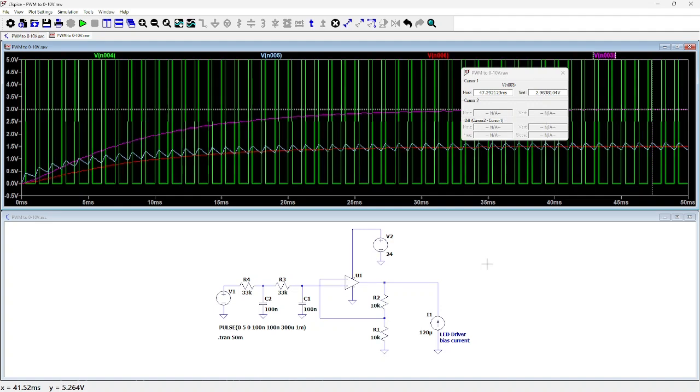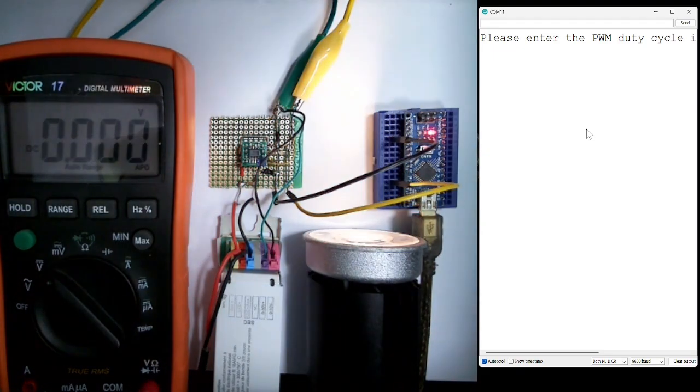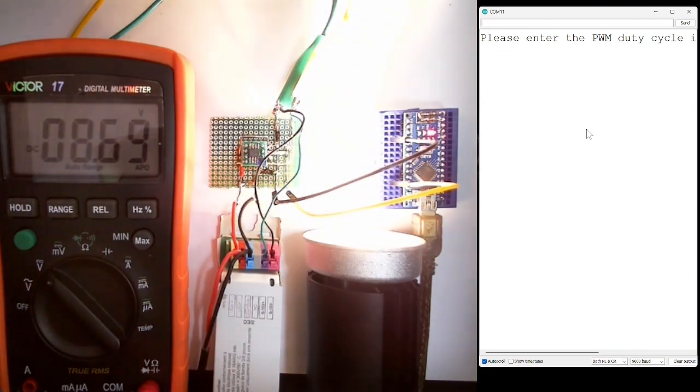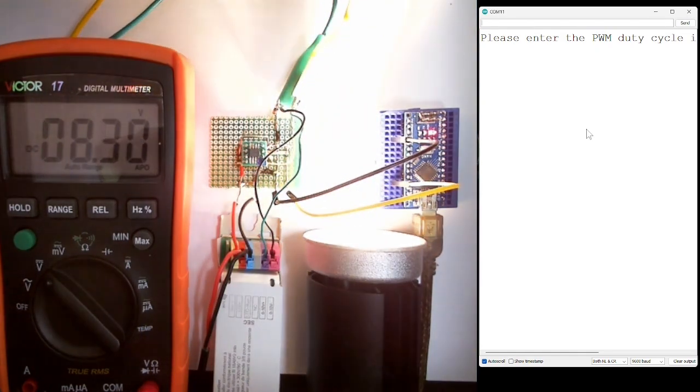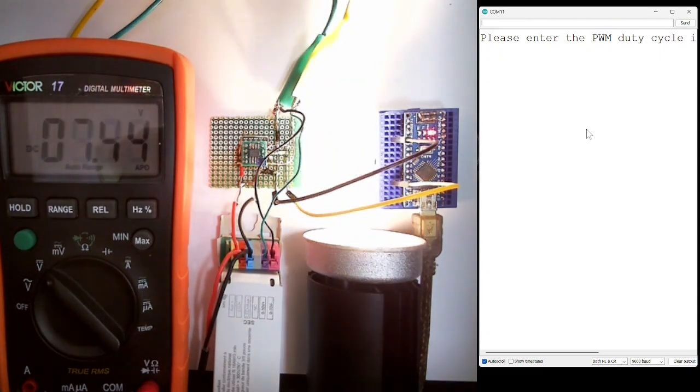Now let's build the circuit and test it. I built up the circuit on a prototyping PCB. Here's the Arduino as PWM signal generator. I used an adapted version of the Arduino fade example. Link is in the description to download the code.